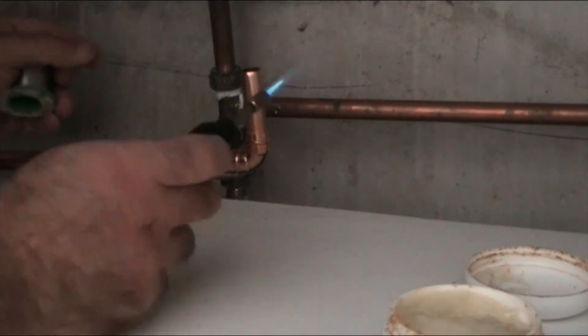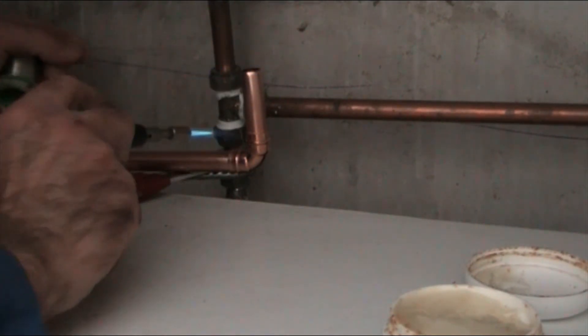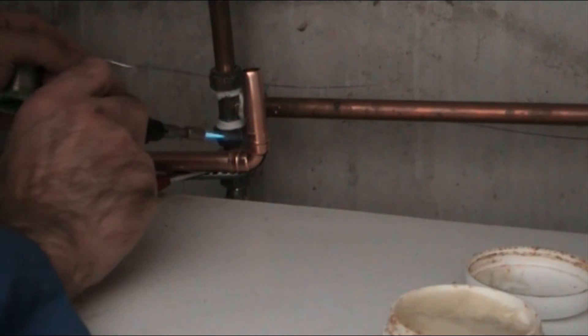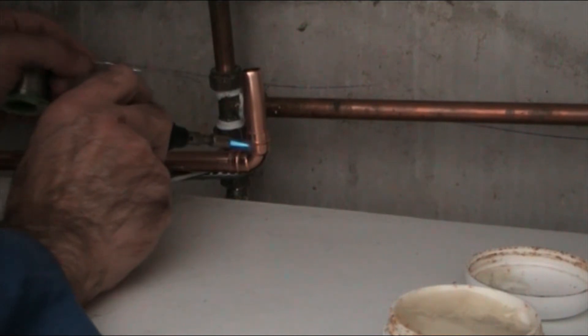So this is the way you solder pipes. Now put a solder ring elbow on these two pieces of pipe and turn your little torch on and heat it up.